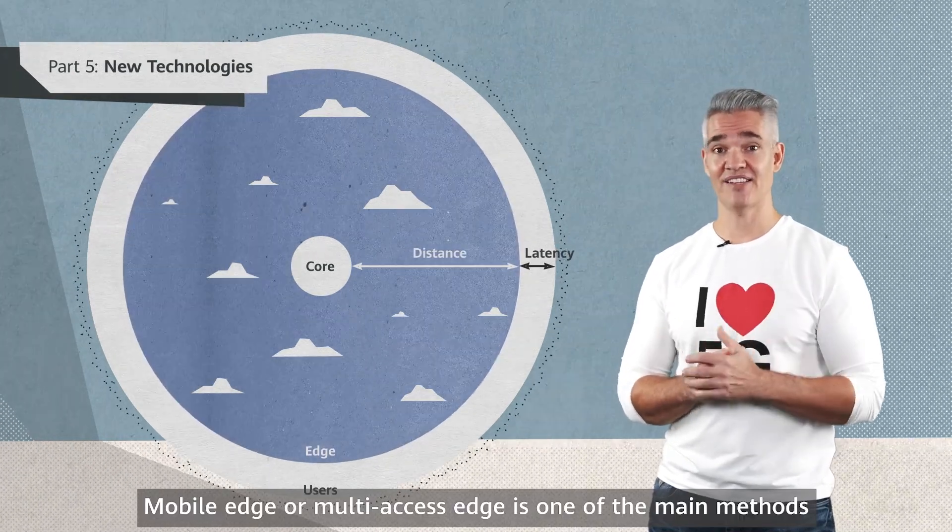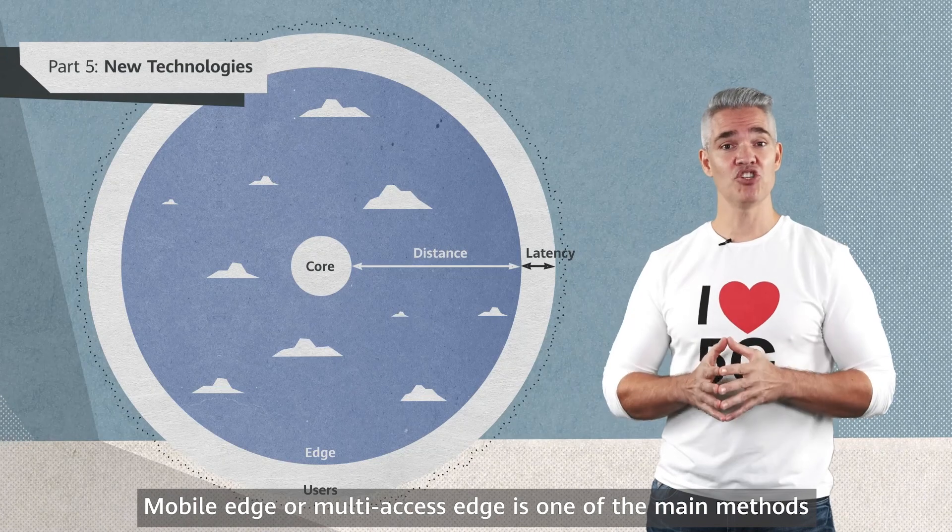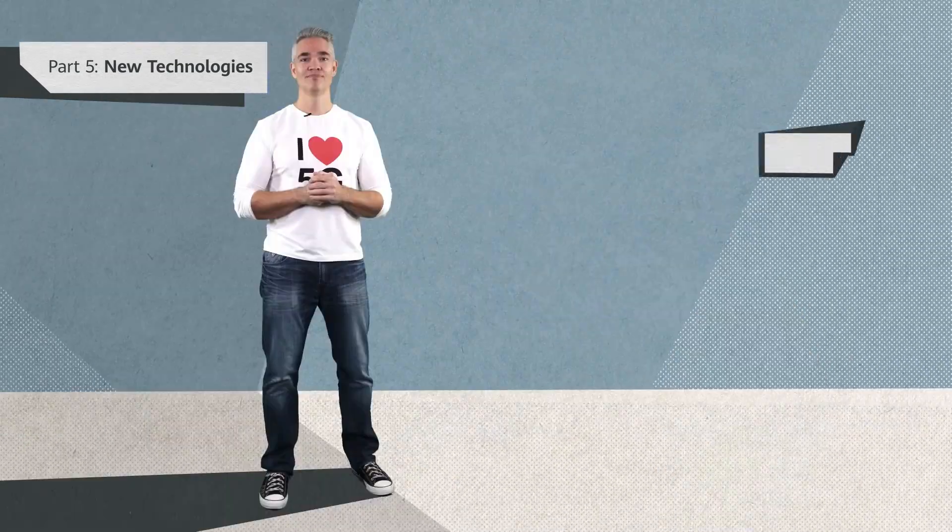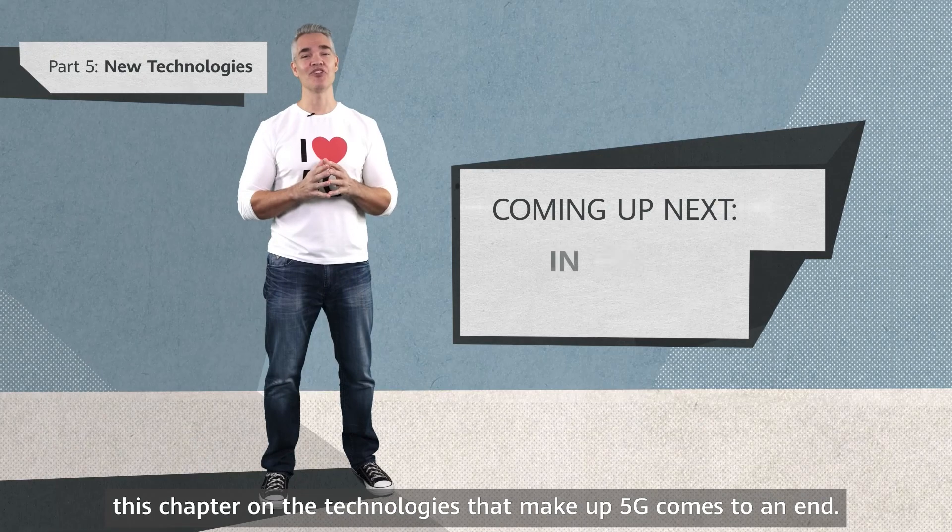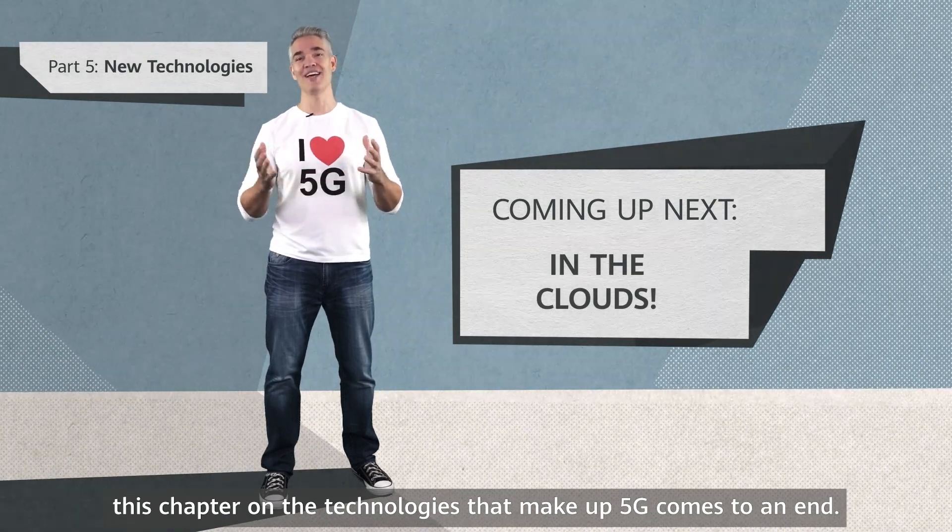Mobile edge, or multi-access edge, is one of the main methods used for reducing latency in 5G. And with this, this chapter on the technologies that make up 5G comes to an end.